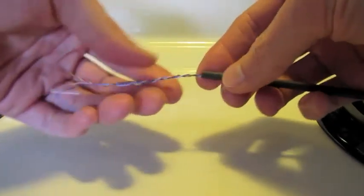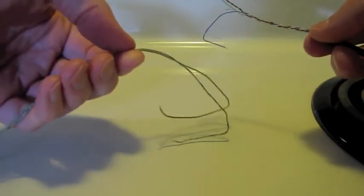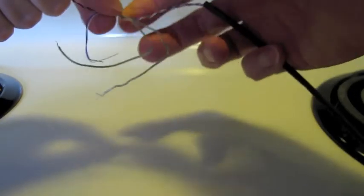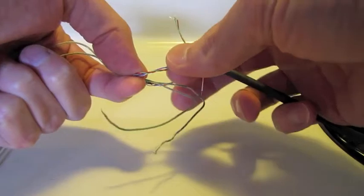Feed the new tonearm wires through a piece of heat shrink tubing that is about 4 inches long. Join the ends of the new and old tonearm wires by bending them around each other.